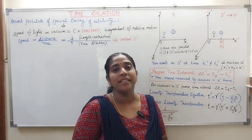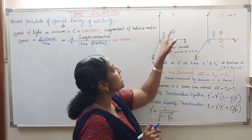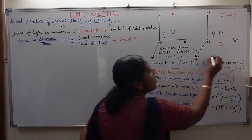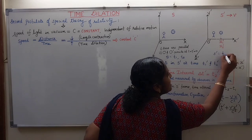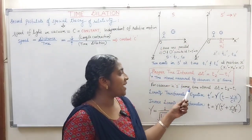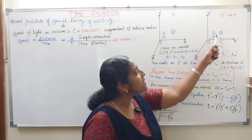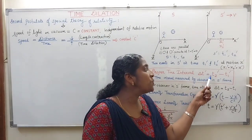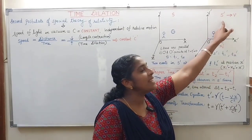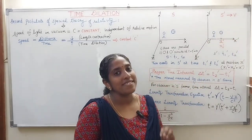Let the physical event be the sounding of an alarm. For the observer in the S frame of reference, the alarm started at T1 and ended at T2. For the observer in the S-dash frame, the alarm started at T1-dash and ended at T2-dash. The time interval measured by the observer in S-dash — the frame in which the event takes place at the same position — is known as the proper time interval.